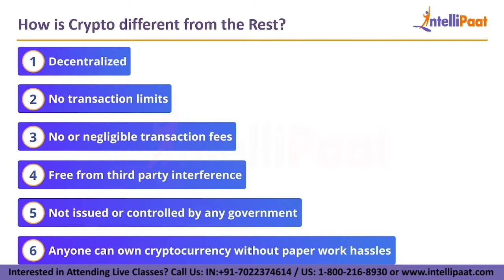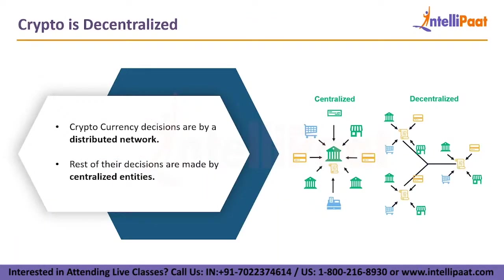Cryptocurrencies are decentralized. A very unique trait of cryptocurrencies is that they are decentralized, which basically means that all the important decisions regarding cryptocurrencies are taken by a distributed network. Whereas the decisions regarding all other currencies and payment systems are made and governed by various centralized entities.